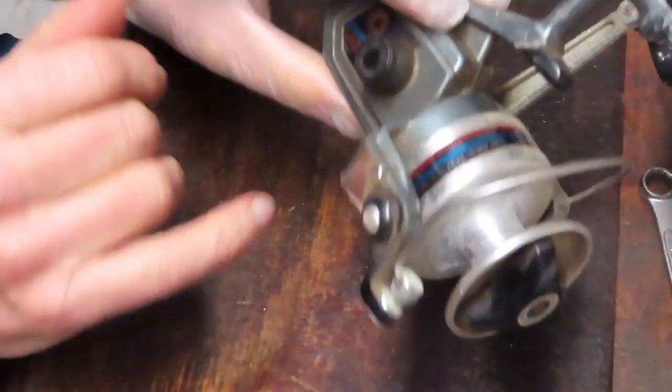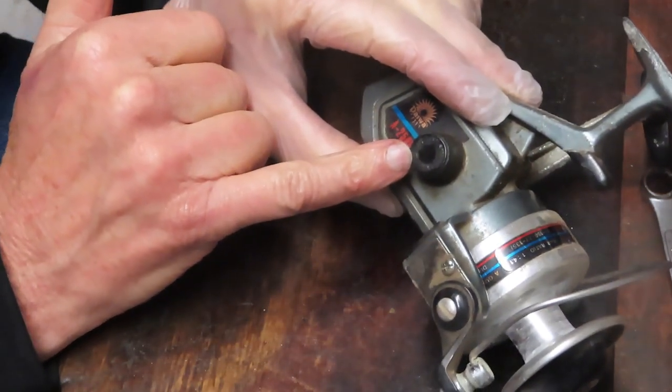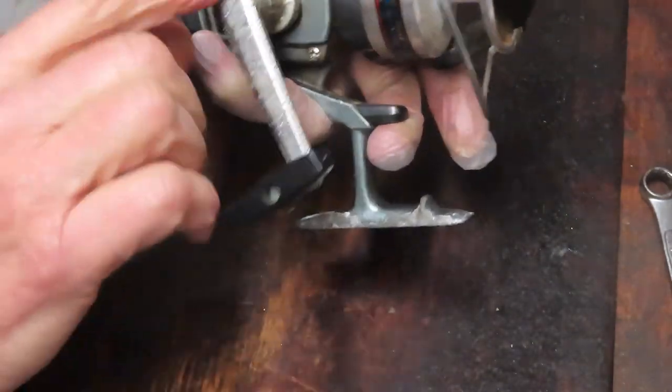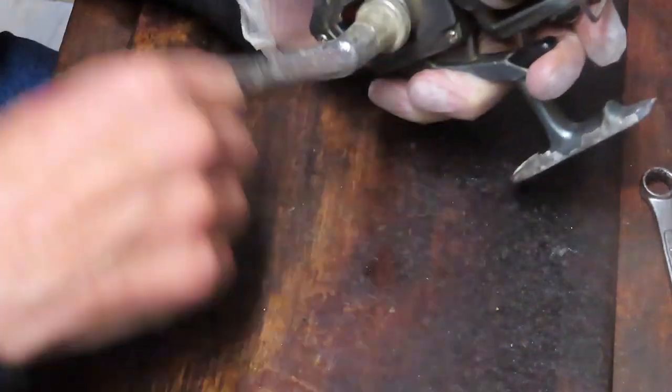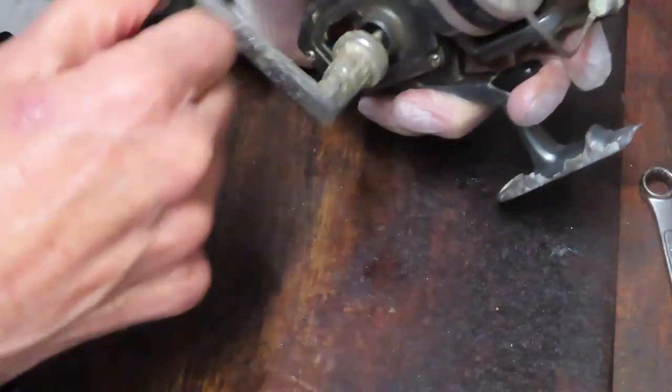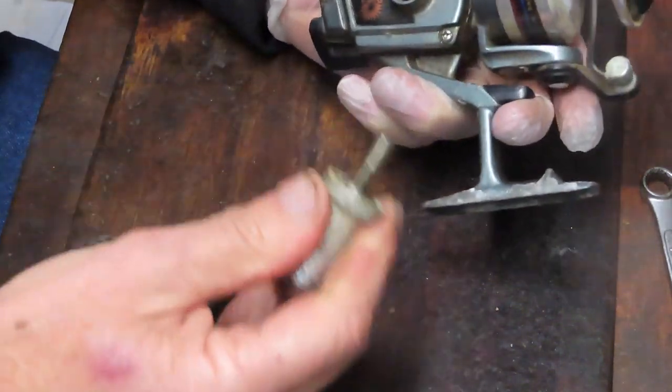The first thing you usually want to do is take the exterior parts off. Notice if this button is moving or not. If the button is not moving, it usually means this is a screw handle. This one is - you remove it by turning it in a clockwise direction.